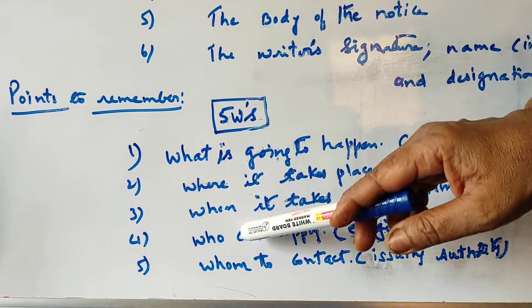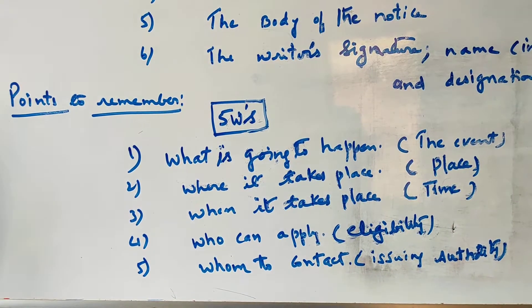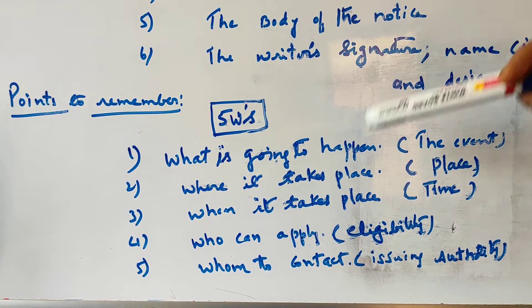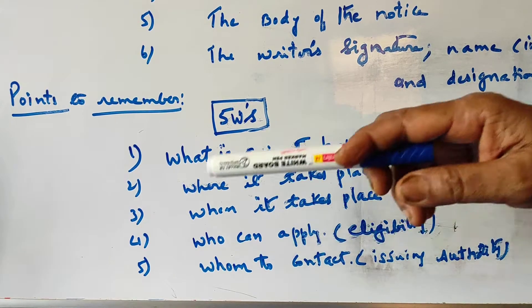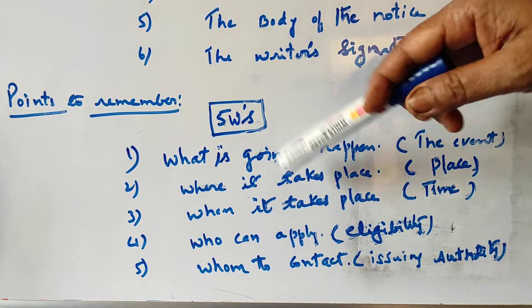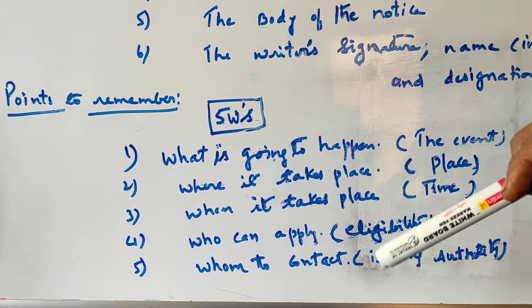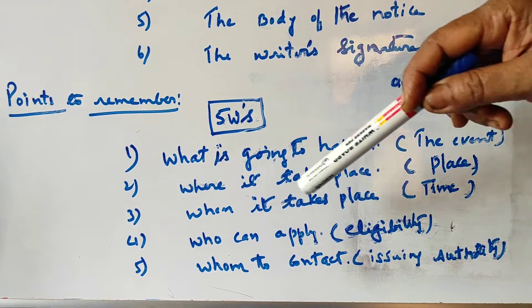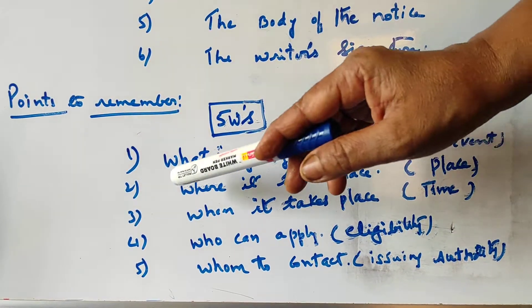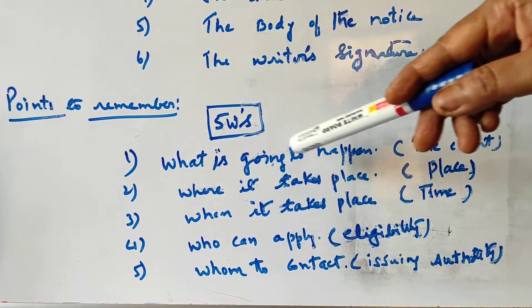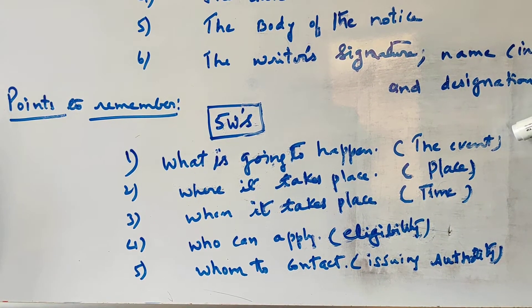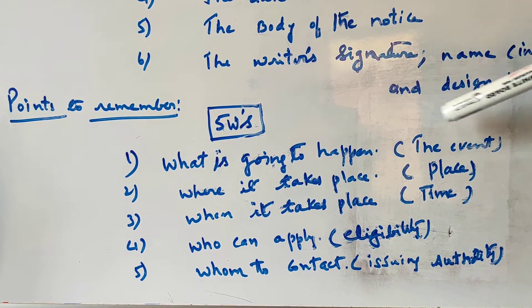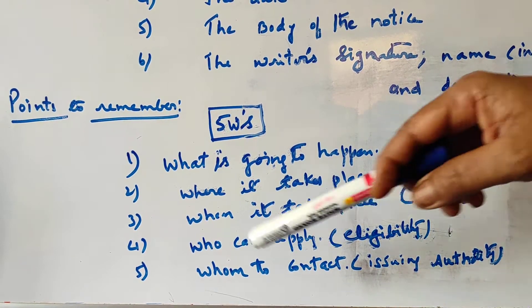After finishing the notice, you have to check whether all these five points have been included or not. Now, some content points we have to remember. The first point is: what is going to happen — so the event. This tells us about the event itself.